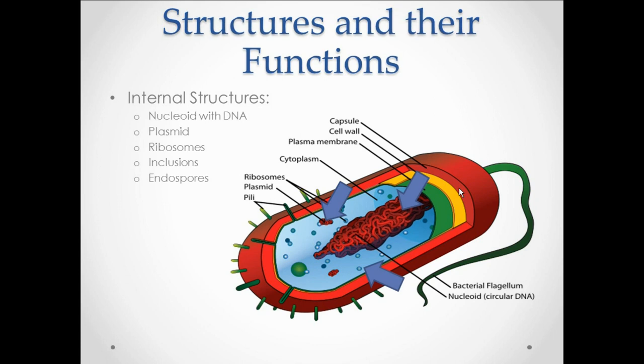Bacterium do have ribosomes, just like eukaryotic cells, and the function of the ribosome is the same for protein synthesis. The only difference between prokaryotic and eukaryotic ribosomes are their sizes. The bacterial ribosome has two subunits. One is 30S and 50S and the overall unit is 70S. Bacteria cells often also have something referred to as inclusions. Inclusions are just going to be areas in which certain nutrients or products are stored or supplied within the cell.